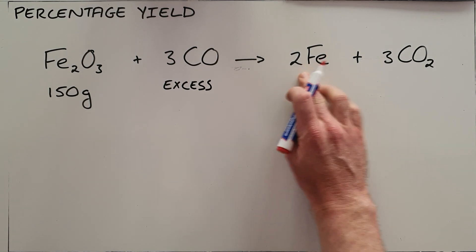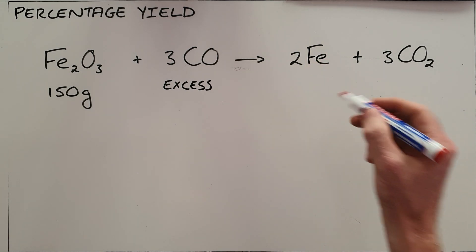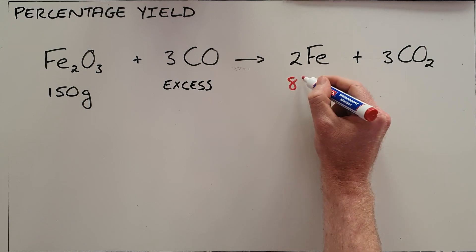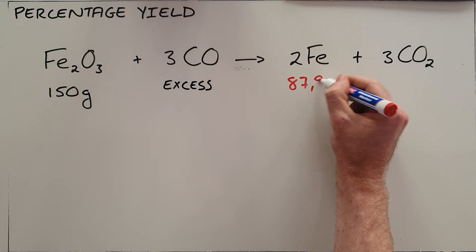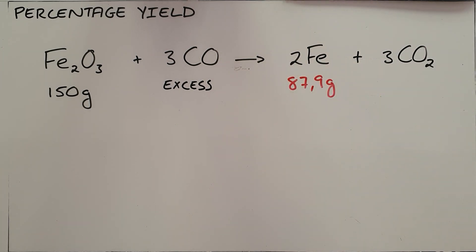What this percentage yield question changes is they now tell you that you actually form 87.9 grams of iron, and then they ask what is the percentage yield of this reaction.